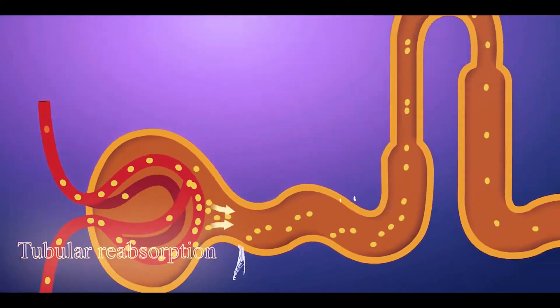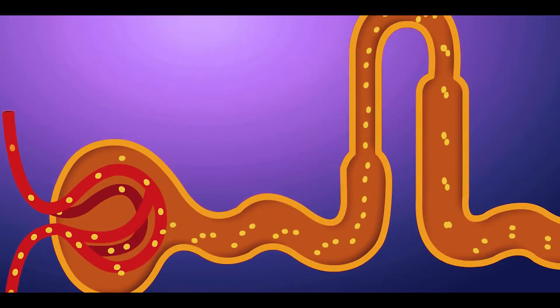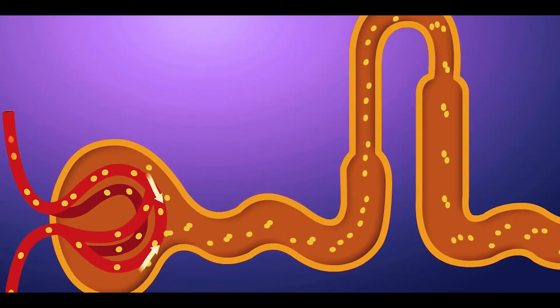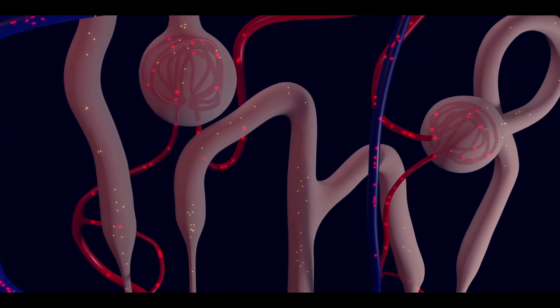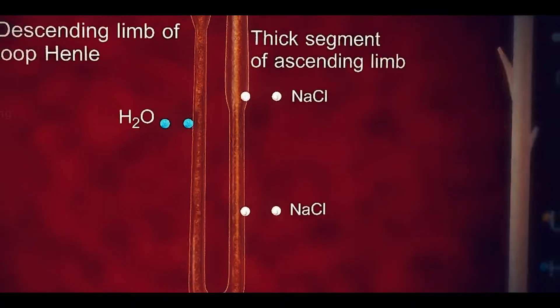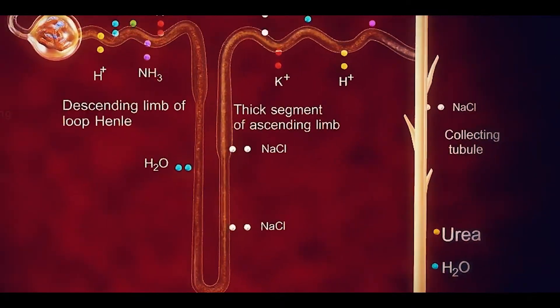In tubular reabsorption, the filtered wastes enter the tubules of nephrons from the glomerulus, where excess water and solutes are reabsorbed back into the blood as per the body's needs. This helps maintain the quantity of ions in the body.